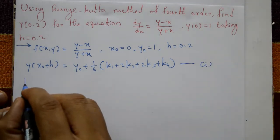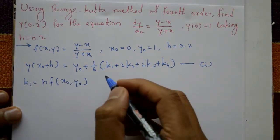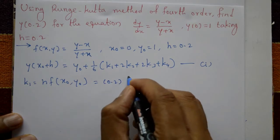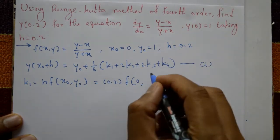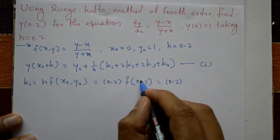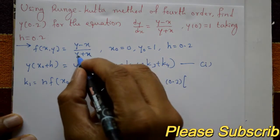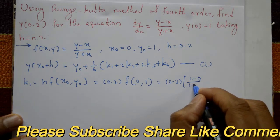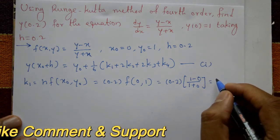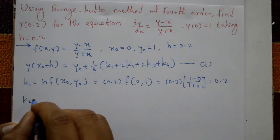k1 equals h times f(x naught, y naught). The h value is 0.2, x naught is 0, and y naught is 1. So k1 equals 0.2 times f(x, y), which is y minus x divided by y plus x, giving 0.2 times (1 minus 0) divided by (1 plus 0). Therefore k1 equals 0.2.